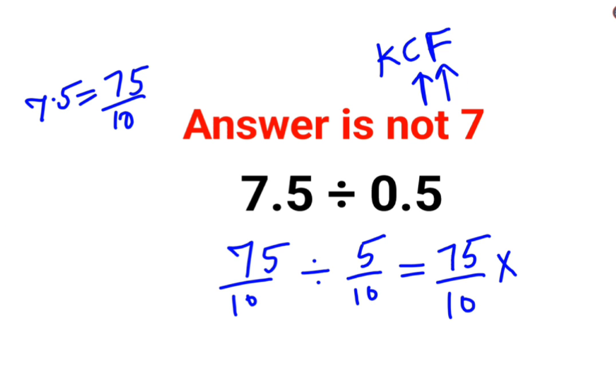In the question, which is basically flipping the next number, or the number which comes after the division sign. So here you will take reciprocal of 5 upon 10 which is 10 upon 5.